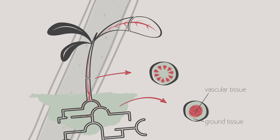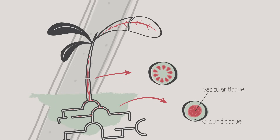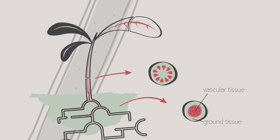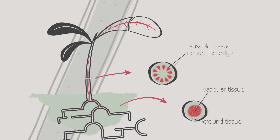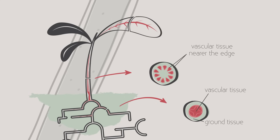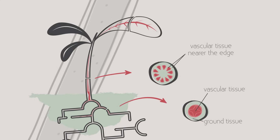Whereas the stem has to resist being squashed and bent, and so it has the vascular bundles nearer to the edge to give the stem strength and support.